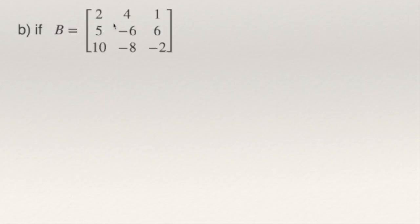If B equals this 3 by 3 matrix, compute 1 half of B. We can say 1 half of B, or you can say 1 half multiplied by B, or 1 over 2 times B. If you make this multiplication, what you need to do is multiply 1 half by every entry of the matrix.